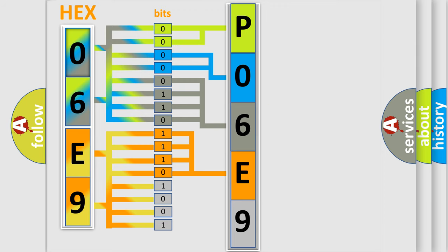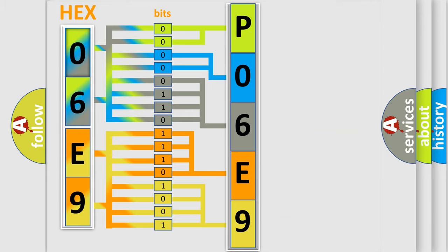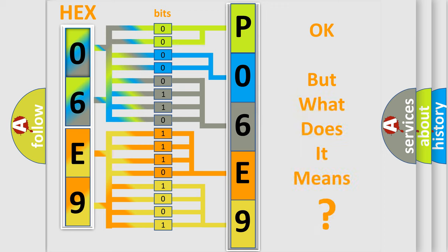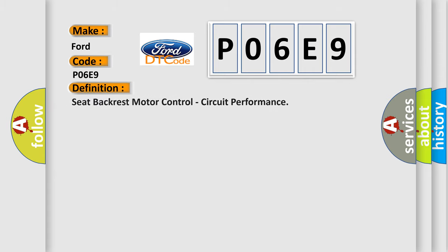A single byte conceals 256 possible combinations. We now know in what way the diagnostic tool translates the received information into a more comprehensible format. The number itself does not make sense to us if we cannot assign information about what it actually expresses. So, what does the diagnostic trouble code P06E9 interpret specifically for Infiniti car manufacturers? The basic definition is: seat backrest motor control circuit performance.